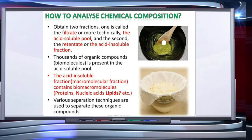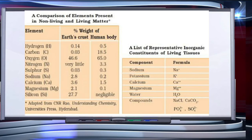One feature common to all compounds found in the acid soluble pool is that they have molecular weights ranging from 18 to around 800 daltons approximately. The acid insoluble fraction has only four types of organic compounds: proteins, nucleic acids, polysaccharides, and lipids.